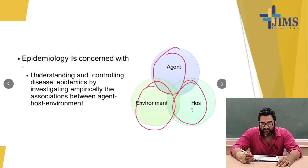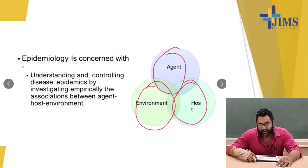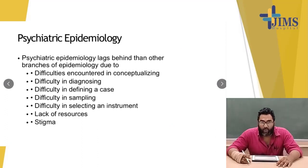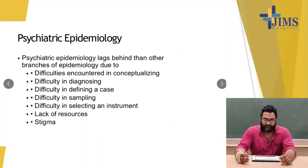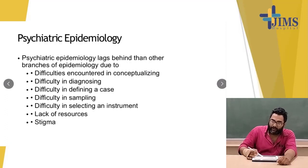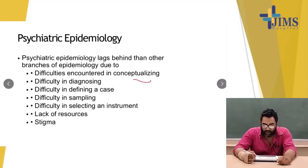These three are important for the epidemiology of any disease, like in COVID. Psychiatric epidemiology lags behind other branches of epidemiology due to difficulties in conceptualizing, difficulty in diagnosing, and difficulty in defining a case.